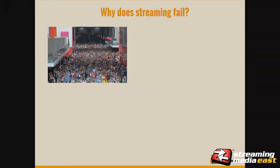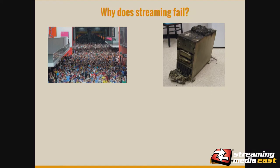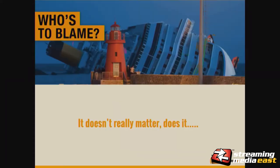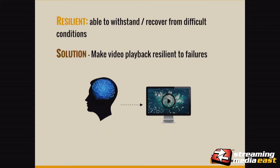Why does it fail? Could be network congestion, could be server meltdown, could be you weren't paying for the fast lane. But really, who do we blame? It doesn't really matter. Your end user doesn't know about anybody's brand except for yours. They don't know whether you had congestion because you were paying this service or that service. They don't care — they just know video on your service was bad. So how do we solve this? It's actually a totally different approach. You have to look at video playback and say: how do we make it resilient? How do we make it able to withstand and recover from difficult conditions?